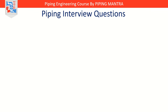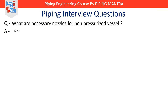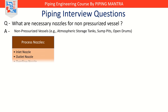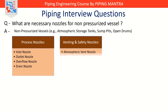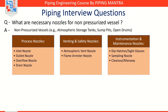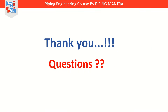Not all vessels are pressurized, so let's also look at the nozzles for atmospheric or non-pressurized vessels. What are the necessary nozzles for non-pressurized vessels? These include tanks, sumps, or open drums. Process nozzles are: inlet nozzle for filling, outlet nozzles for liquid extraction, overflow nozzle to prevent overfilling, and drain nozzle for complete emptying. Venting and safety nozzles are: atmospheric vent nozzle — it lets the tank breathe — and flame arrestor nozzle for fire protection in hydrocarbon service. Instrumentation and maintenance nozzles include: dip hatches or side glasses for manual checks, sampling nozzle for quality testing, and clean-out or manway for sludge removal and inspection.